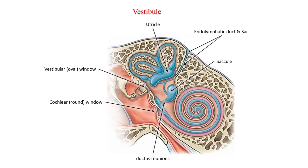Now it's time to move on to the vestibule. The vestibule is the central portion of the bony labyrinth. It contains the oval window into which the stapes fits and the round window on the opposite end. The membranous labyrinth within the vestibule consists of two connected sacs called the utricle and the saccule. The utricle is larger than the saccule and lies in the upper back portion of the vestibule, receiving the ends of the three semicircular ducts through five openings. The duct of the saccule unites with the duct of the utricle to form the endolymphatic duct, which ends in a dilation called the endolymphatic sac. The saccule is also connected to the cochlear duct via a small duct known as the ductus reunions.